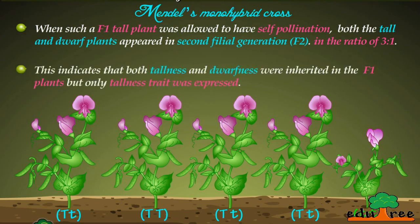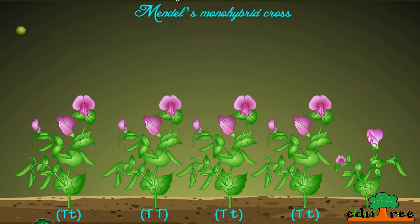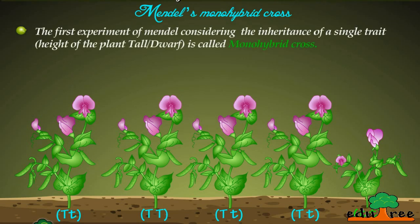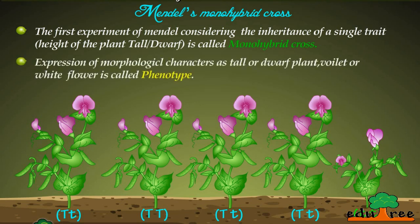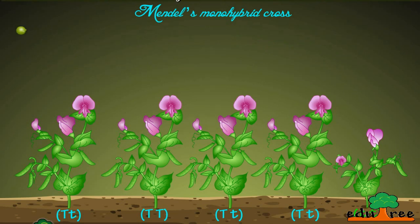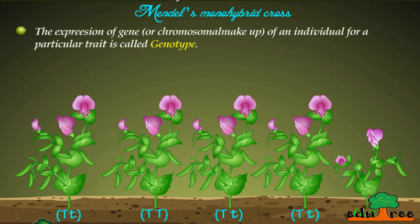This indicates that both tallness and dwarfness were inherited in the F1 plants, but only the tallness trait was expressed. The first experiment of Mendel, considering the inheritance of a single trait — the height of the plant, tall or dwarf — is called a monohybrid cross. Expression of morphological characters, such as tall or dwarf plant, or violet or white flower, is called phenotype. The expression of gene or chromosomal makeup of an individual for a particular trait is called genotype.